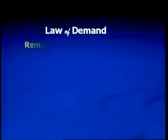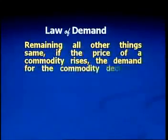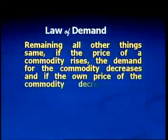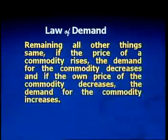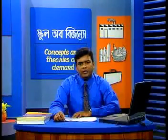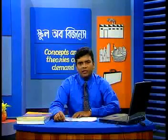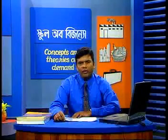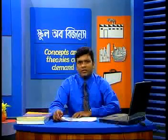So, now let us see what the law of demand says. Remaining all other things the same — if the price of the commodity rises, the demand for the commodity decreases. If the price of the commodity decreases, the demand for the commodity increases. Now, if we use numerical numbers to depict the relationship between price of the commodity and the quantity demanded, we will find the demand schedule. Let us now see what a demand schedule is.